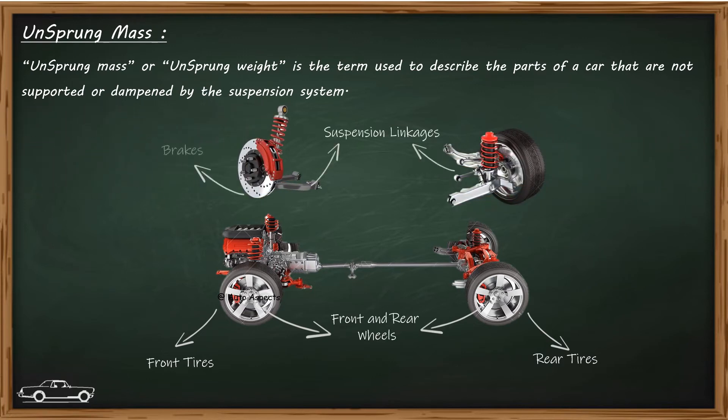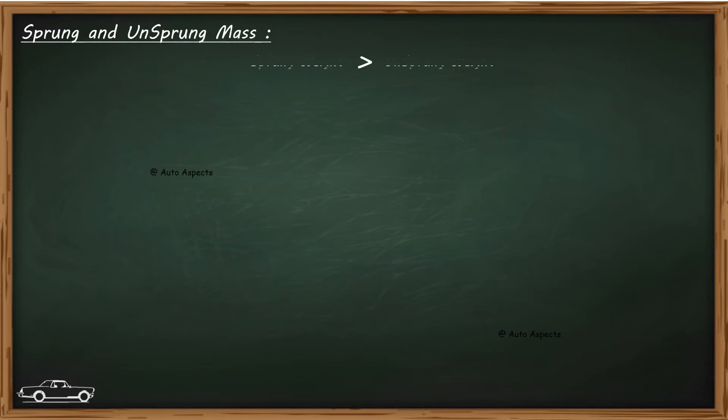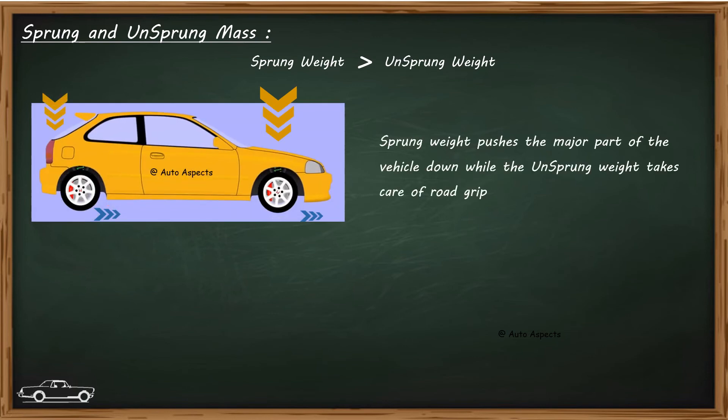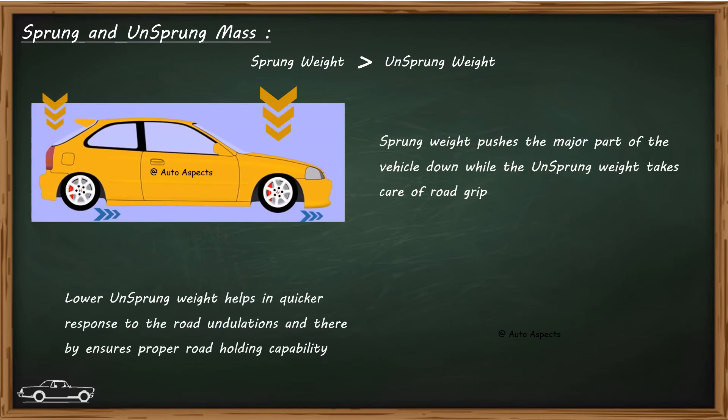Generally, vehicles will be designed with higher ratio of sprung mass to unsprung mass. Thus sprung weight helps in pushing the major part of vehicle down, while the unsprung weight gives better road grip as the vehicle moves.